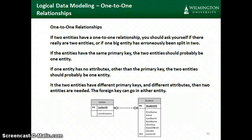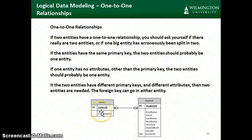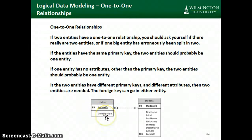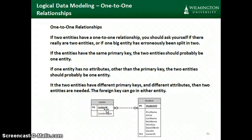One thing to check for with one-to-one relationships is whether these are really two different entities, or whether they should be combined into one. Can we just put the locker ID in the student entity and eliminate the locker entity altogether? To determine this, find out if there are any attributes associated with the locker — like the combination, location, or size — that we need to store. If there are attributes associated with the locker, it should be its own entity. If the only thing we need to know is the locker ID, we don't need an entity with only a primary key and no other attributes; we can just put the locker ID in the student table.